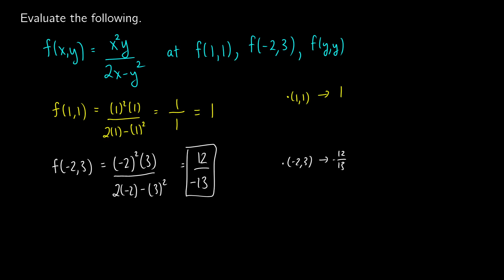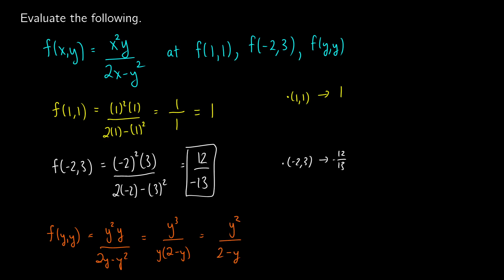Finally, we can substitute in with variables as well. For f of y y, we replace every x with y and keep y as y. So we get y squared times y over 2y minus y squared. That gives us y cubed divided by 2y minus y squared. We factor a y out of the bottom to get y times (2 minus y), then cancel a y on top and bottom, leaving y squared over 2 minus y. Plugging in values for y then gives us a real number output.